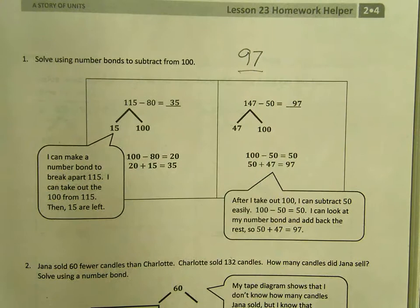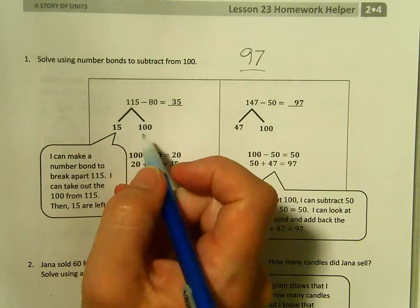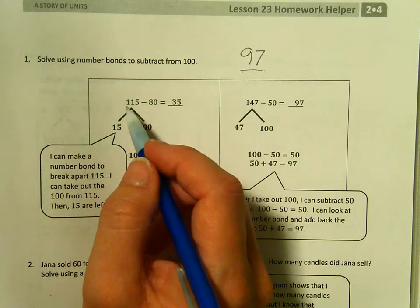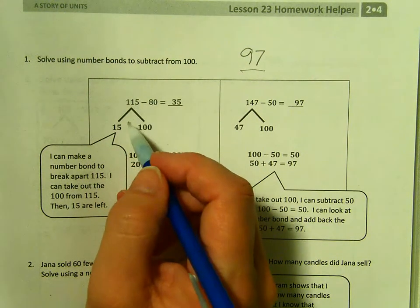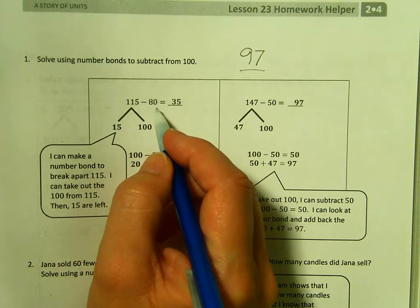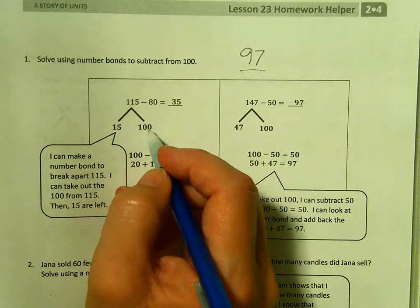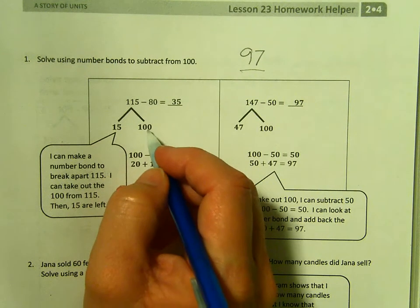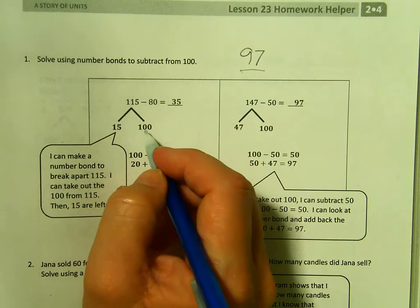What we're doing in this lesson is decomposing to subtract from a three-digit number. So if the number you are taking away is a ten without any ones, it is super easy to subtract that from 100 because 100 is 10 tens.